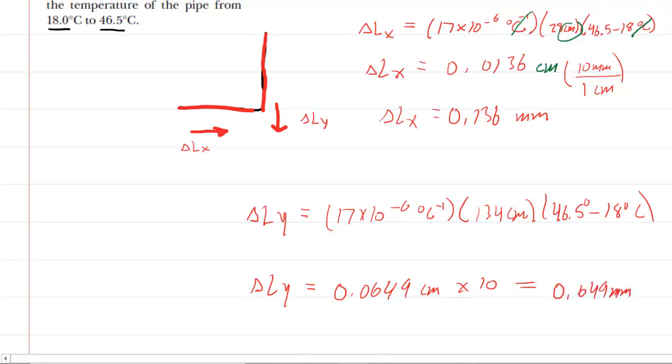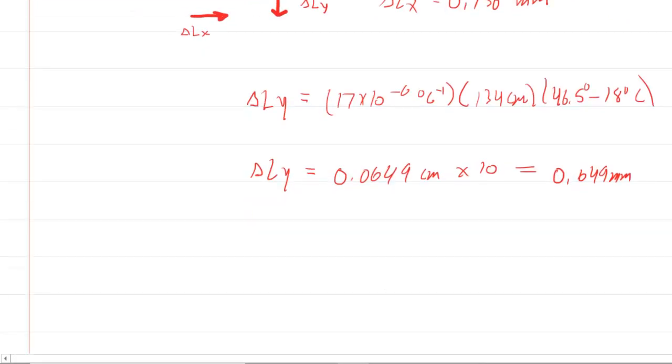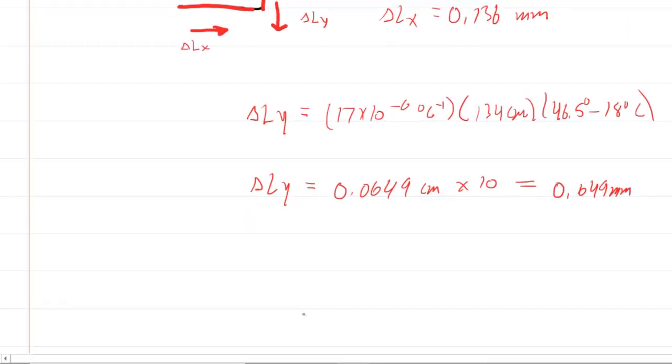Now, the overall change in length needs to be determined, the overall magnitude. And to do that, we have to revert to some vector addition. So we have a vector pointing to the right. We have a vector pointing downward. To get that resultant, which we'll just make blue, you're going to have to do the Pythagorean theorem.